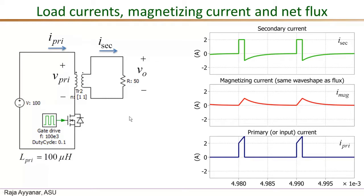The switching frequency is 100 kHz, so the switching period Ts = 1/100k = 10 μs. With a duty cycle of 0.1, the on-time Ton = 0.1 × 10 μs = 1 μs. In the simulation run at steady state, one cycle spans 10 μs and the on interval is exactly 1 μs, confirming these values.